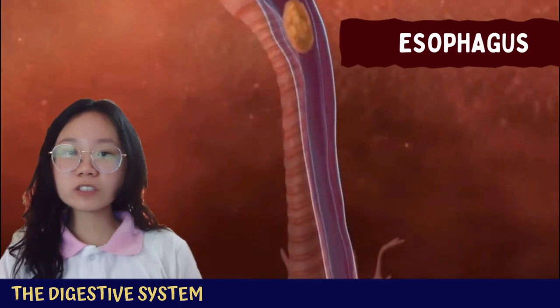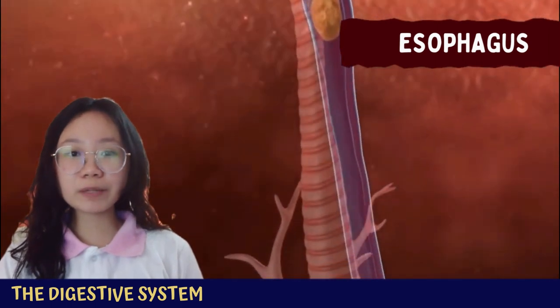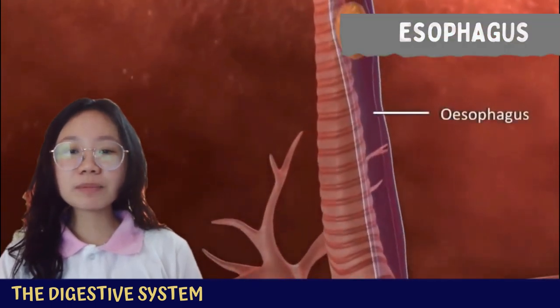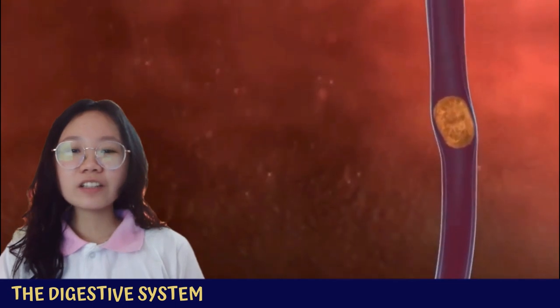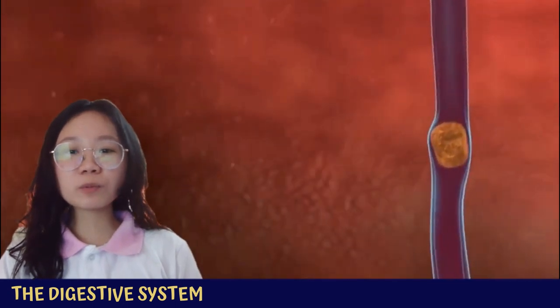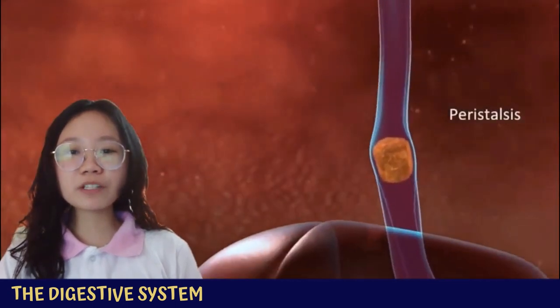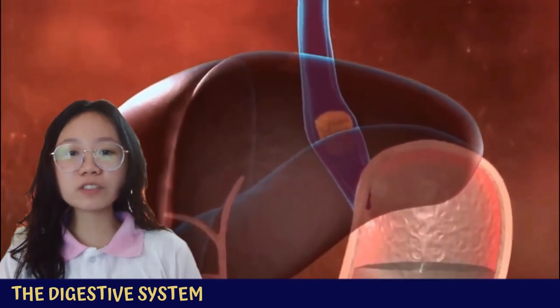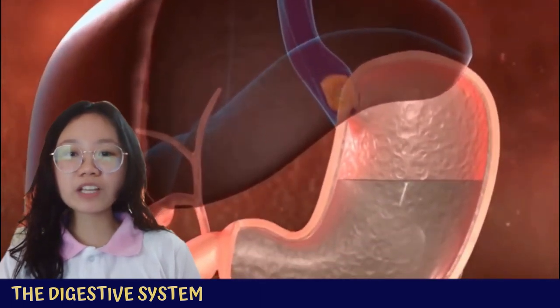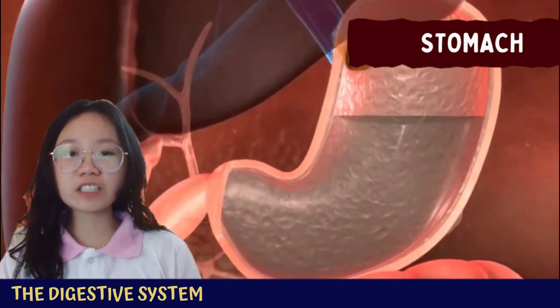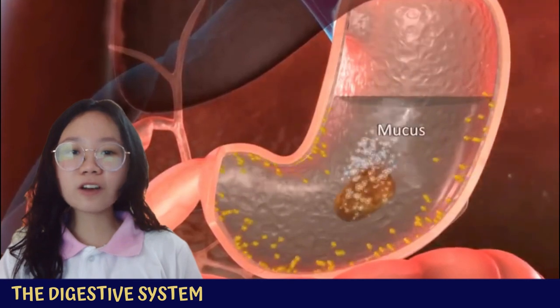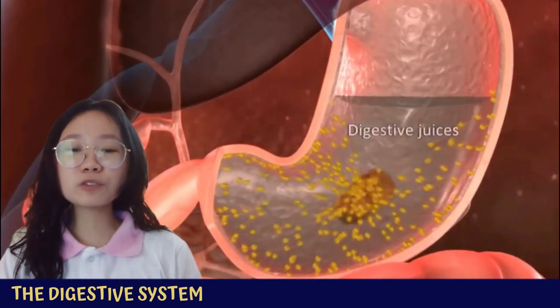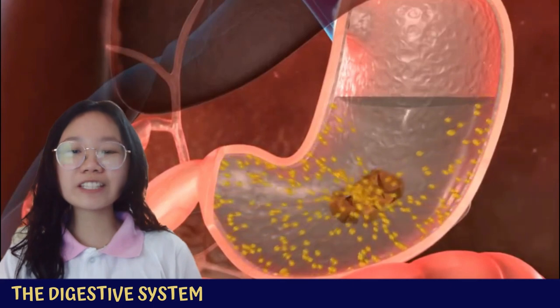After swallowing, food travels through a long muscular tube called the esophagus, also known as the food pipe. It serves as the passageway of food and water from the mouth to the stomach, where particles stay for approximately four hours. The stomach is a J-shaped organ whose primary function is breaking down the bolus into even smaller pieces and mixing it with gastric juices, turning bolus into chyme. The stomach releases acids such as hydrochloric acid and enzymes to further break down food particles.